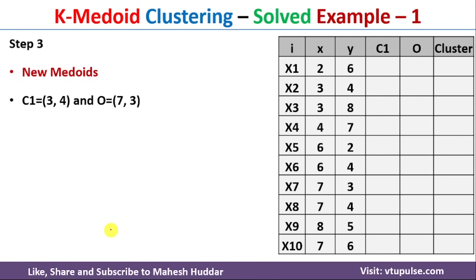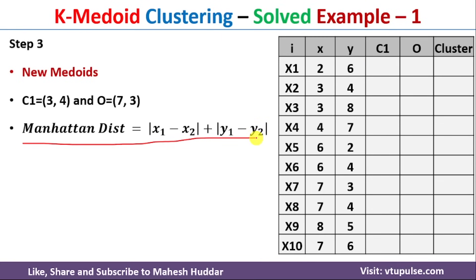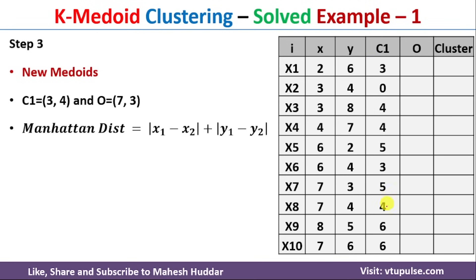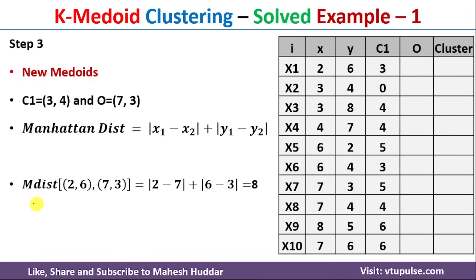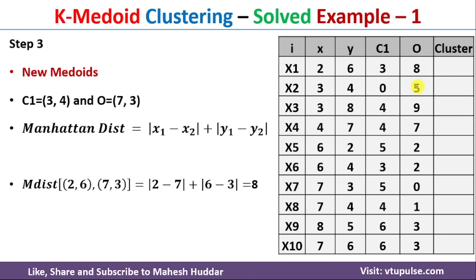With the new medoids C1=(3,4) and O=(7,3), we recalculate distances. Since distances from (3,4) to all data points were already computed, we reuse those values. For the new second medoid (7,3), we calculate distances to each data point. For example, the distance from (2,6) to (7,3) is |2−7| + |6−3| = 5 + 3 = 8. We then compute distances from (7,3) to all remaining data points similarly.